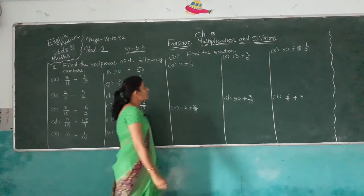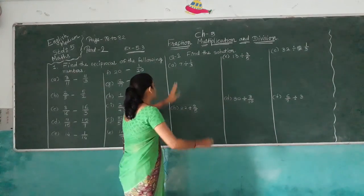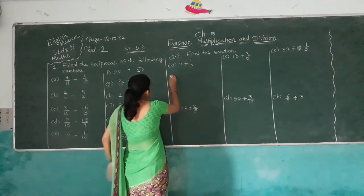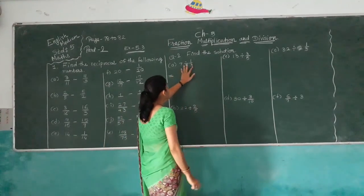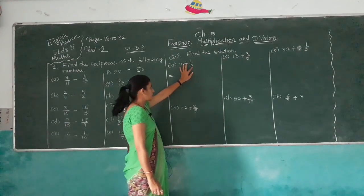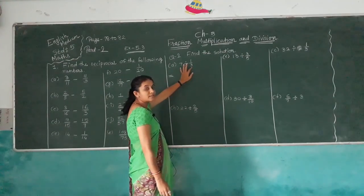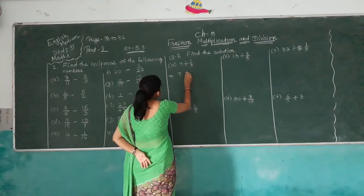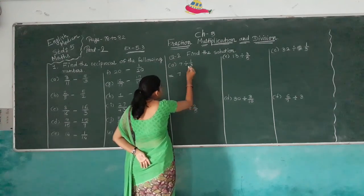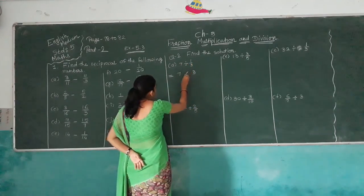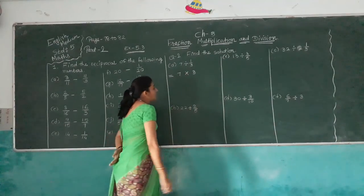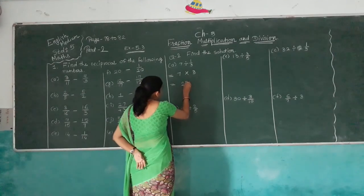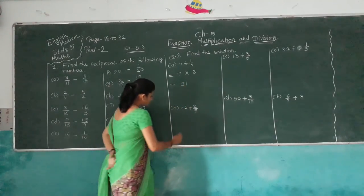Next question: find the solution. For 7 divided by 1/3, in division we use the reciprocal method. The reciprocal of 1/3 is 3, so the division symbol is replaced with a multiplication symbol. 7 multiplied by 3 is 21. So the answer is 21.